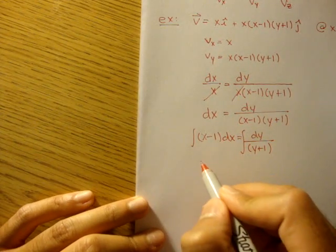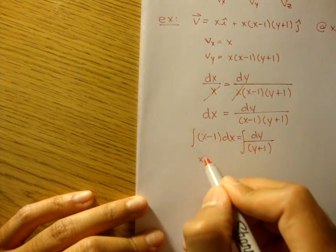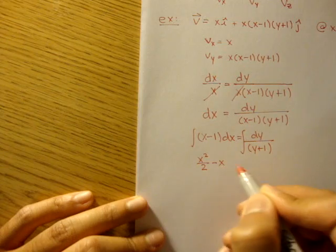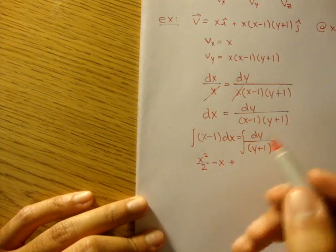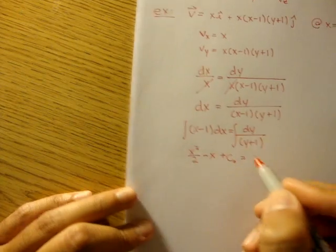And on this side, if we integrate x minus 1 with respect to x, we'll get x squared over 2 minus x plus a constant. We'll call that c naught.